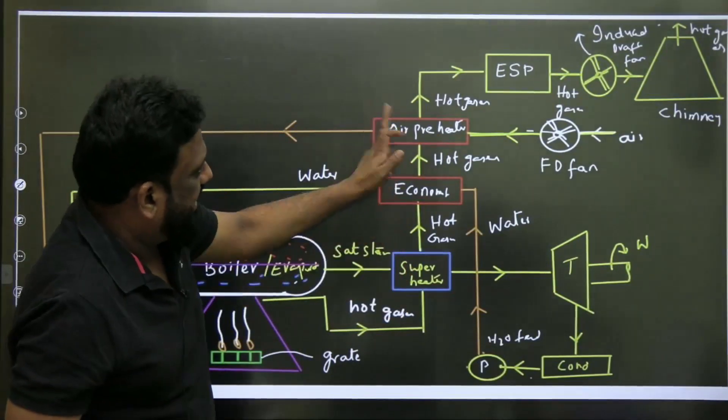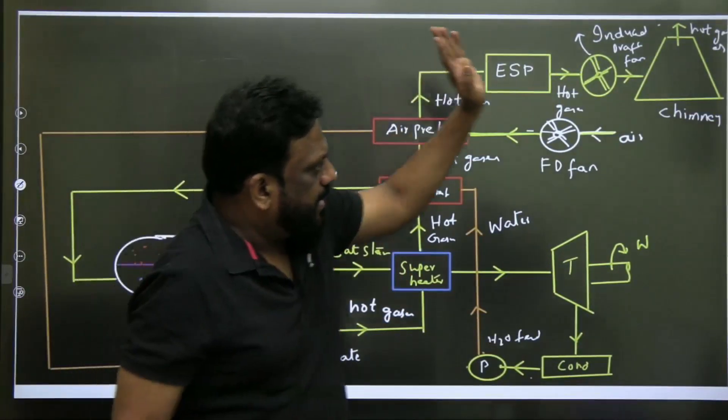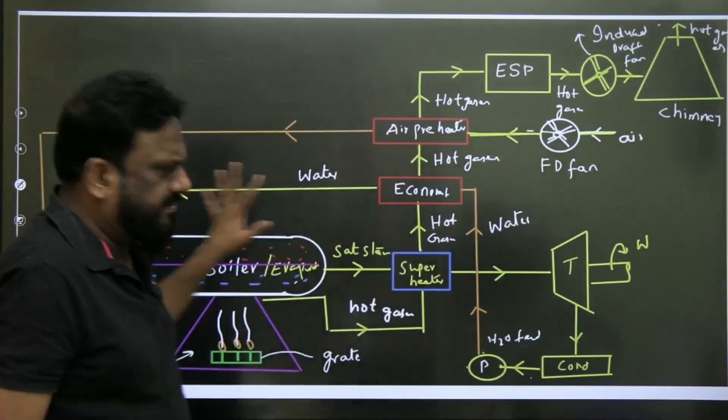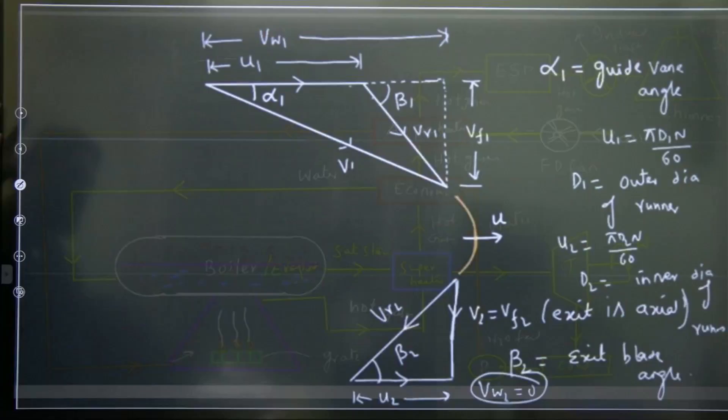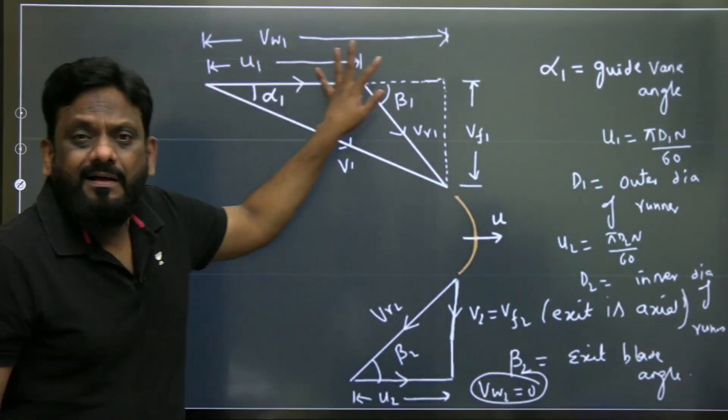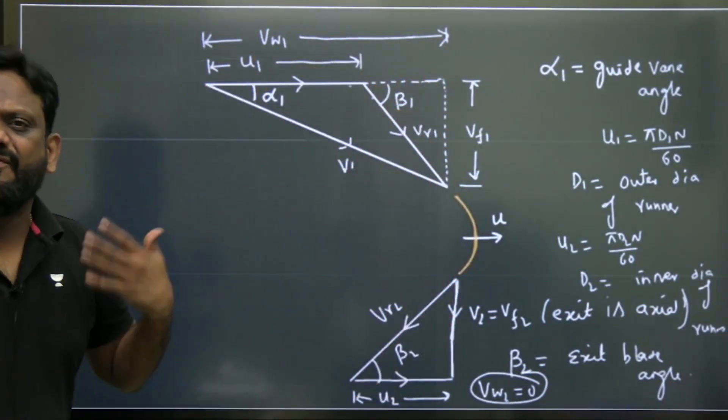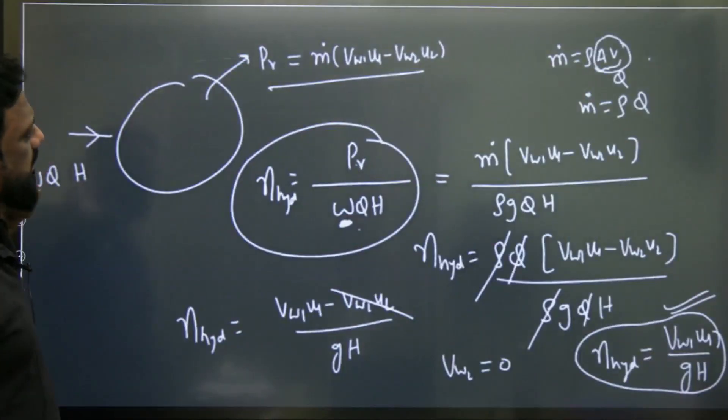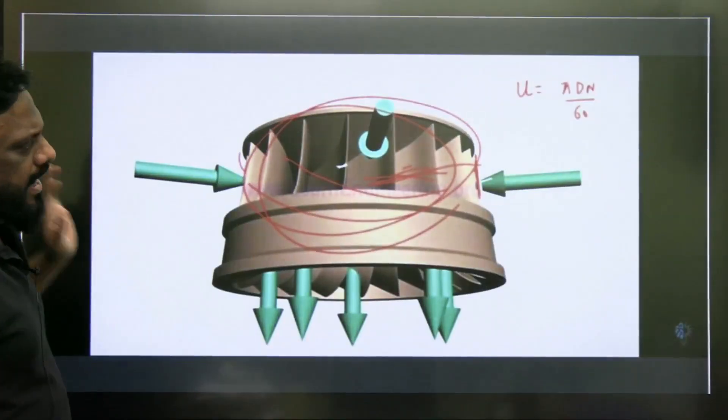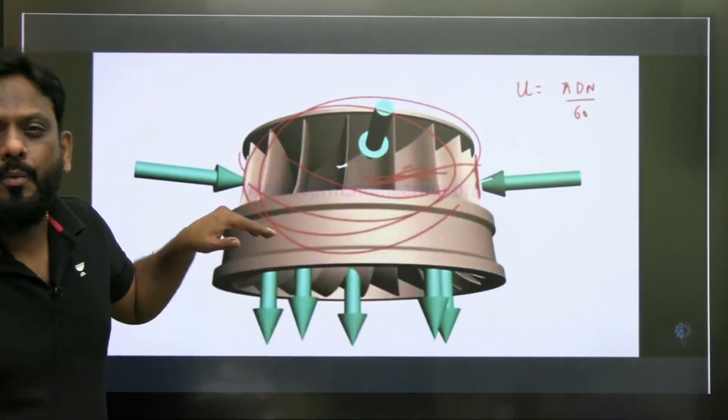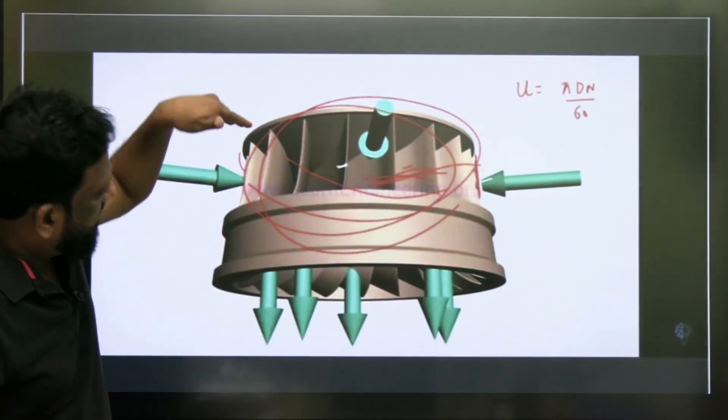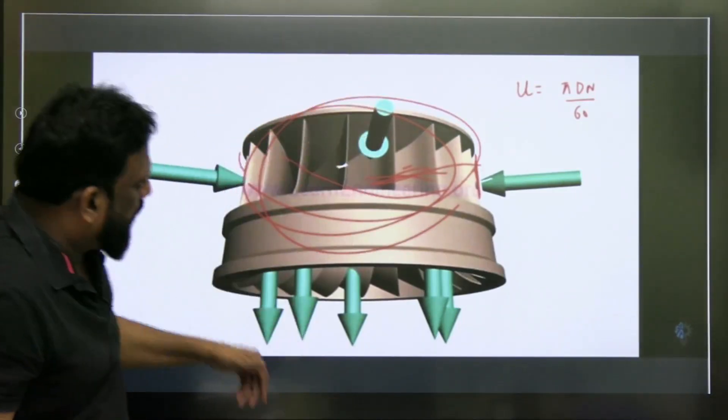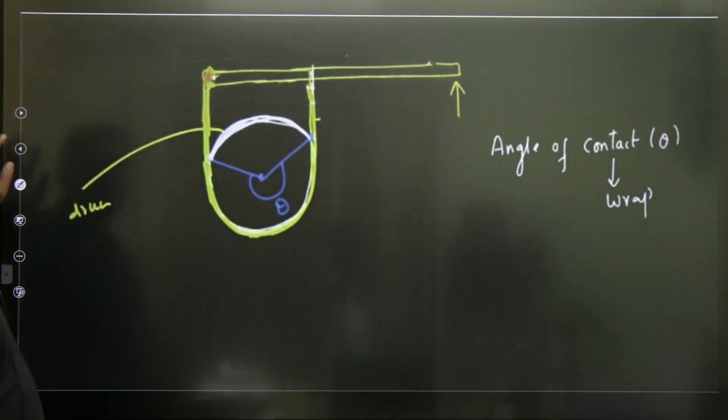Superheater, economizer, air preheater, electrostatic precipitator, induced draft, chimney, everything is done to the best. And which is important from engineering services point of view. Then we have velocity triangles, Pelton wheel, Francis turbine, Kaplan turbine, all done to the best. And why this is a Francis turbine, I explained how it is a mixed flow. Clearly, I told very clearly how it is entering radially inwards and axial outlet. Everything is explained in a very systematic manner.